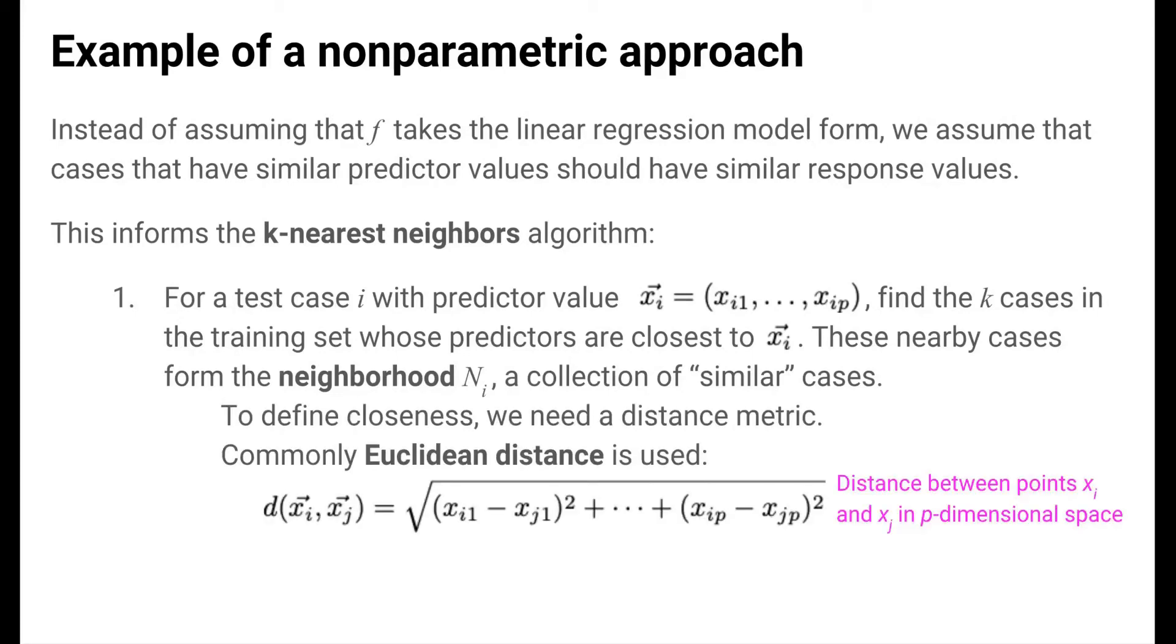Note that to define how close two cases actually are, we need to have some sort of distance metric. Commonly, the Euclidean distance metric shown here is used, but there are many different types of distance metrics. Euclidean distance measures the diagonal distance between two points in space.